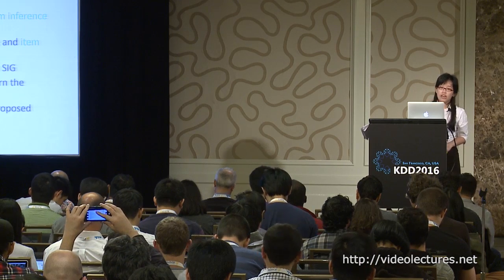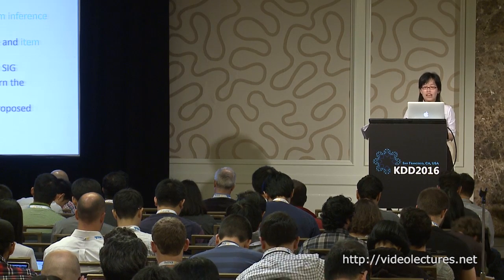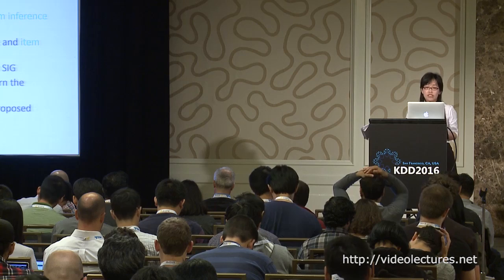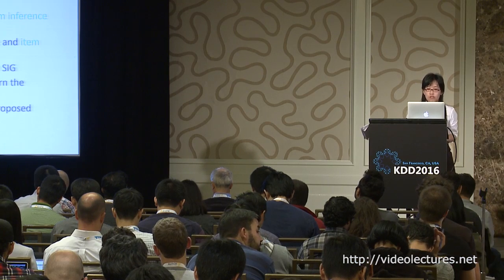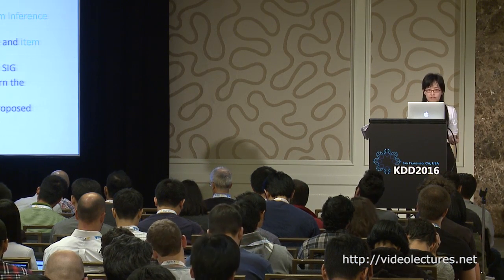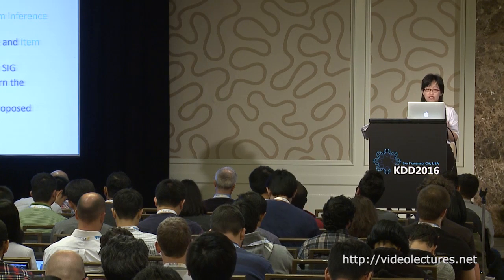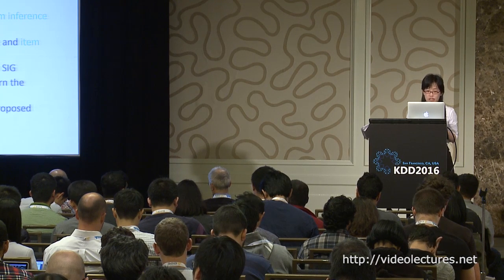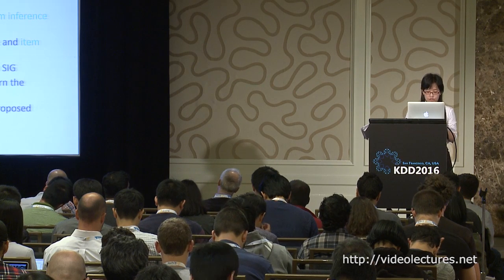Finally, we conclude our paper. We observe that although both social inference and item inference are well-investigated individually, few works consider them jointly to better capture user behavior. To address this, we propose the SIG model to capture both effects using hyper-edges. We propose a new inference maximization problem in SIG, develop a statistical inference-based framework to learn the weights from data, and experiments validate the effectiveness and efficiency of our proposed methods.